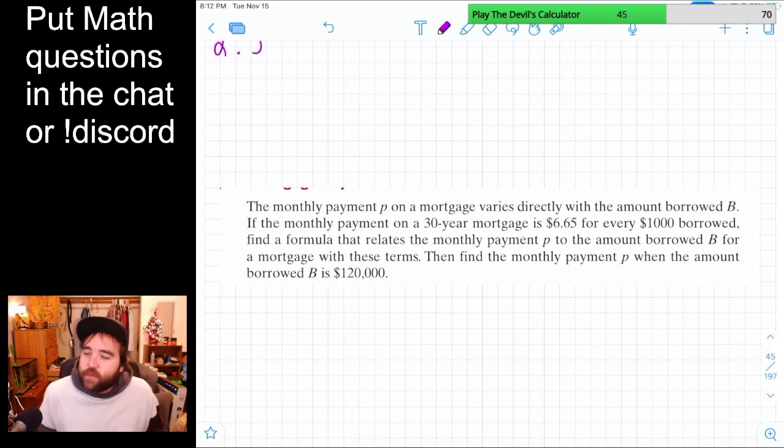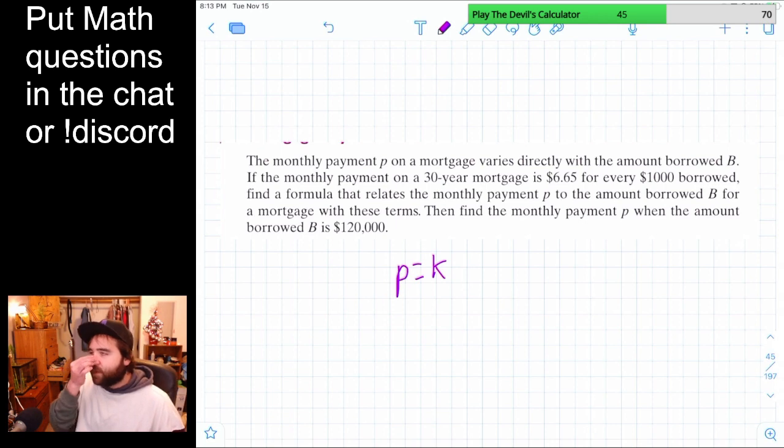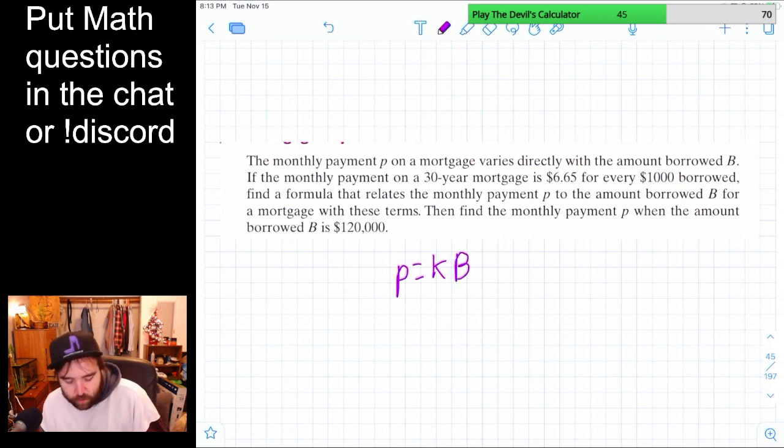Alright, so this chapter is talking about stuff like varying directly and varying inversely, and I've always had trouble with that, so we're going to have to think harder in this section. But let's look at the problem. The monthly payment P on a mortgage varies directly with the amount borrowed. So let's start writing equations already. So varies directly, and we also just think about how this makes sense, that our monthly payment P is going to equal some number, it's going to be like a fraction, right? Because the monthly payment's like a fraction of everything you borrow, but that's fine, some number K times the total amount borrowed.